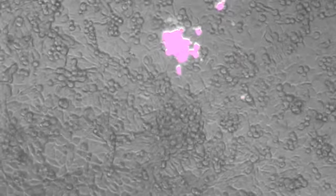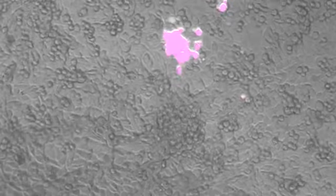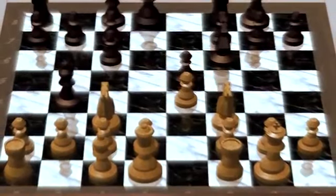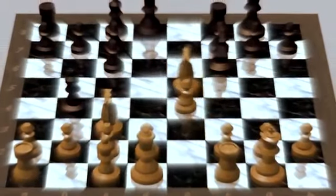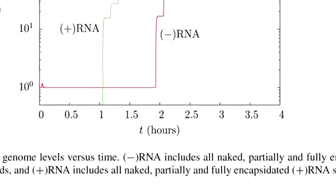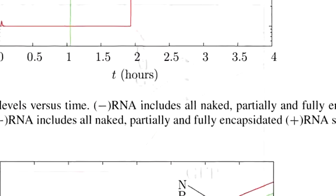By using modeling to explore the possible mutations, the Yin Lab is able to play a game in genetic chess, looking several moves ahead to find a virtual drug that won't let the virus mutate out of its predicament.